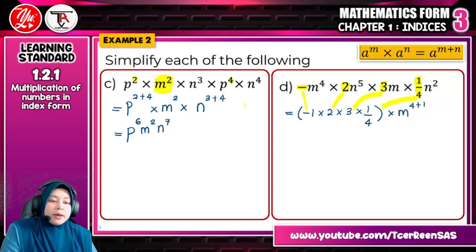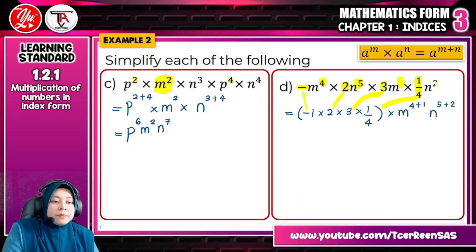So m with m, m here 4 plus, please remember if nothing here means 1, so 4 to the power of 4 plus 1. And then n is 5 plus 2, n plus because n here combine with the operation multiply there. So the final answer is just like this.